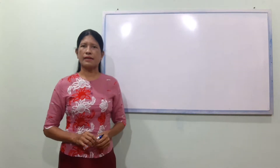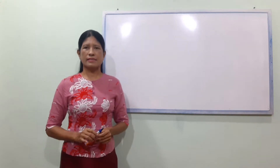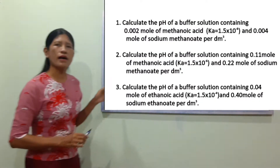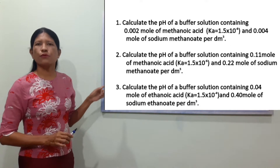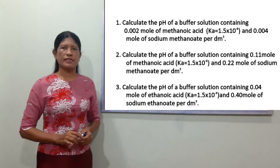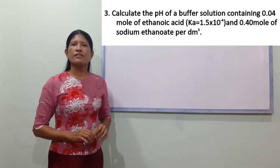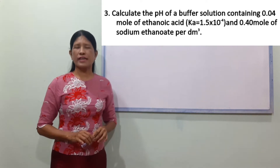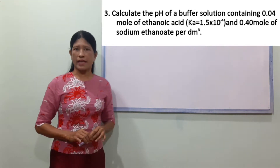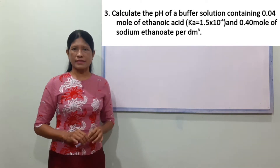So, this will help you to learn more about the S&P Center of Neutralization. The answer is: Ka is equal to 1.5 into 10 power minus 4, and 0.40 mole of sodium ethanoate per dm³.